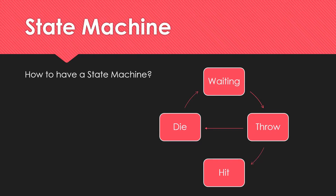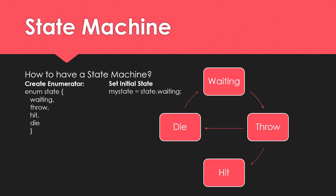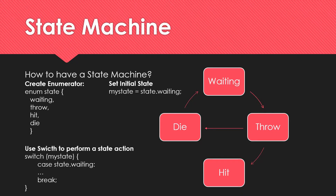To implement a state machine that works properly, I use an enumerator on my create event — an enumerator called 'state' with waiting, throw, hit, and die states. I set the initial state to state.waiting. Then on the step event I use a switch statement on my state variable, selecting the current state and handling transitions — for example, the throw state moving to either die or hit state.